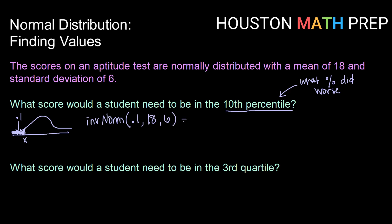your standard deviation of 6. Typing that in, we get a score of 10.31. So a student would need to score a 10.31 to be in the 10th percentile.